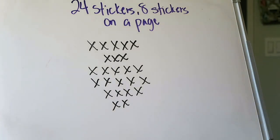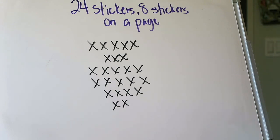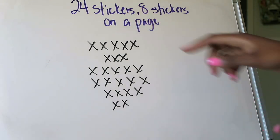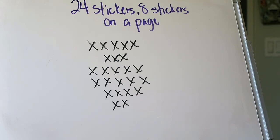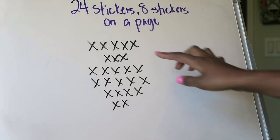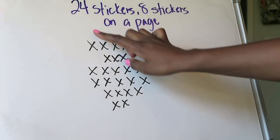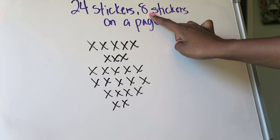Alright, let's look at our first example in this lesson. I have moved away from my obsession with cupcakes and cookies and now I'm looking at 24 stickers. What's different about these problems in this lesson is that you are told how many items you have, so I know I have 24 stickers, but all I know is that I want those 24 stickers to be arranged with eight stickers on one piece of paper. I don't know how many equal groups or how many pieces of paper I will need.